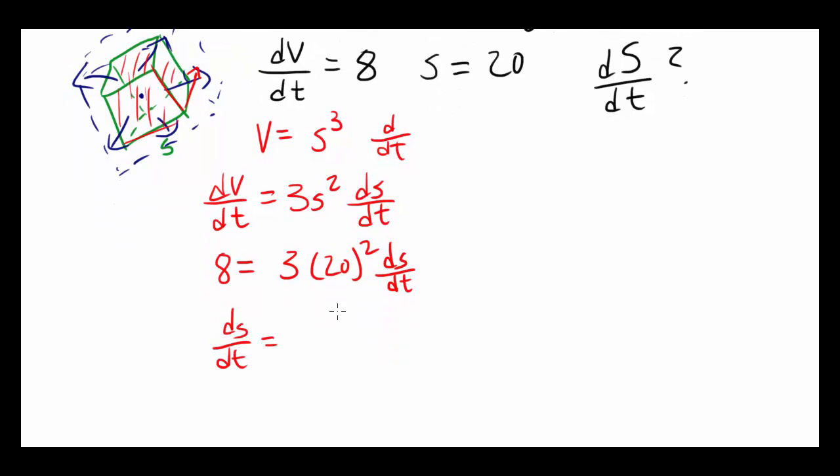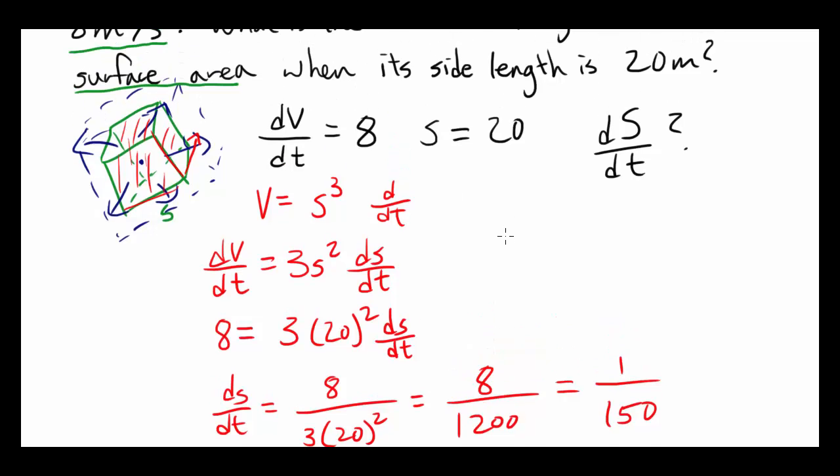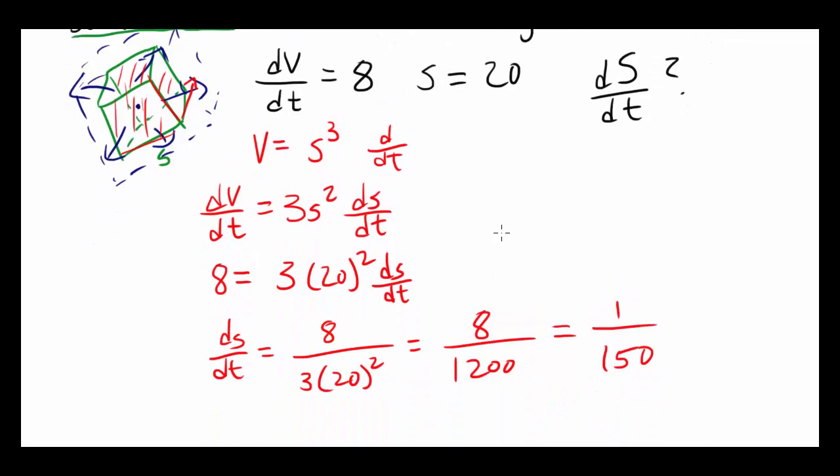What's dS/dt? That's going to be 8 over 3 times 20 squared, or 8 over 1200. Also known as, let's actually divide by 8, 1 over 150. 1 over 150 is the rate of change of the side length with respect to time.